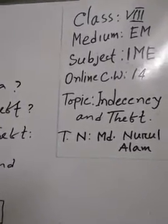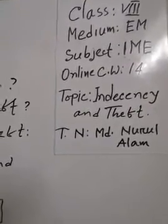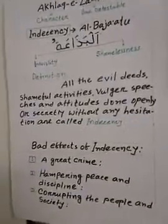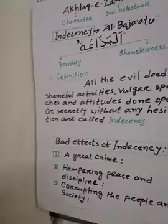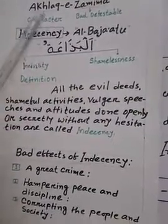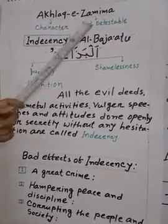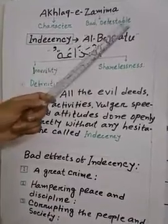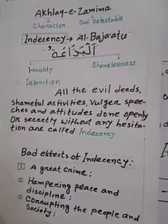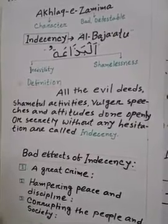Today I am teaching you what types of topics. First, on the chart paper, we know Akhlaq. Akhlaq means character. There are two types of Akhlaq: Akhlaq-e-Hamida and Akhlaq-e-Zamima. Akhlaq means character and Zamima means bad or detestable. Akhlaq-e-Zamima means bad or detestable character.